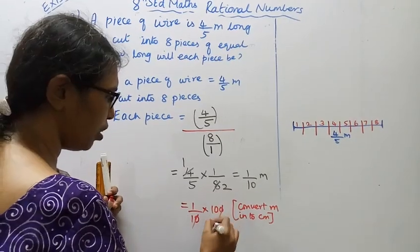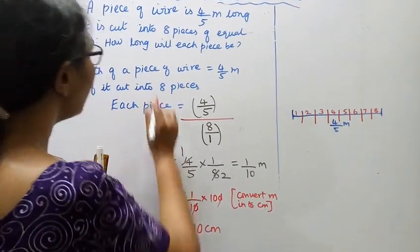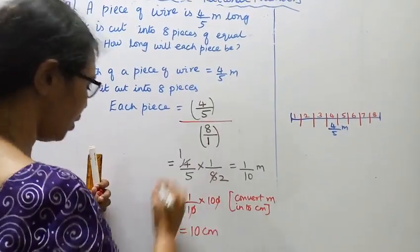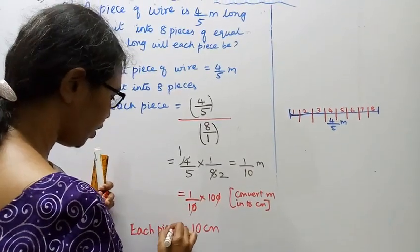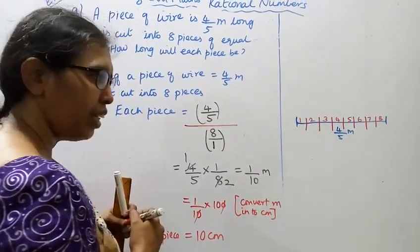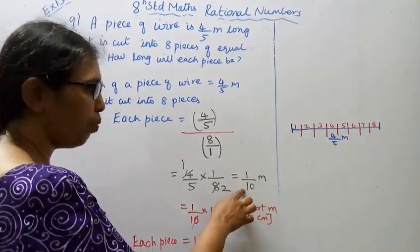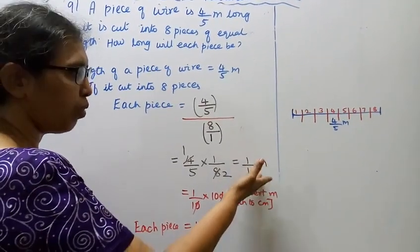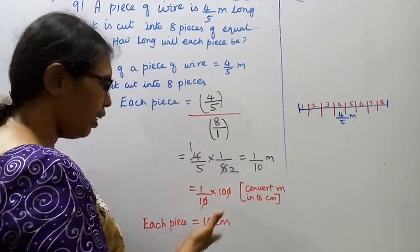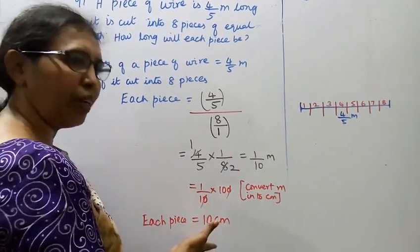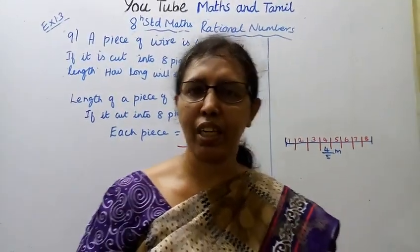Converting to centimeters: 1 by 10 meter. How long will each piece be? Each piece is 1 by 10 meter. To convert 1 by 10 meter to centimeters, we get 10 centimeters.